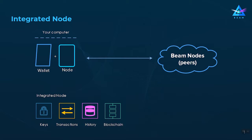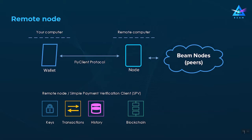When you choose the first option and run an integrated node, both your wallet and your node are running on the same machine — the node is embedded within the wallet. All the functions we discussed: key management, transaction management, transaction history, and blockchain updates, take place on your machine within your wallet.